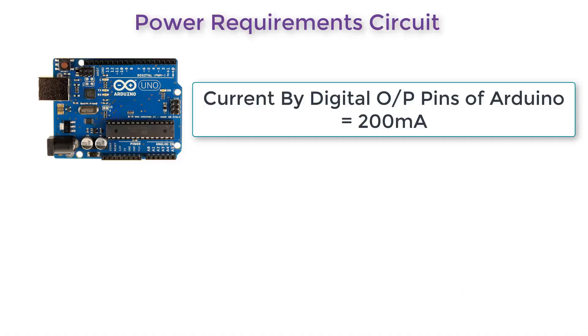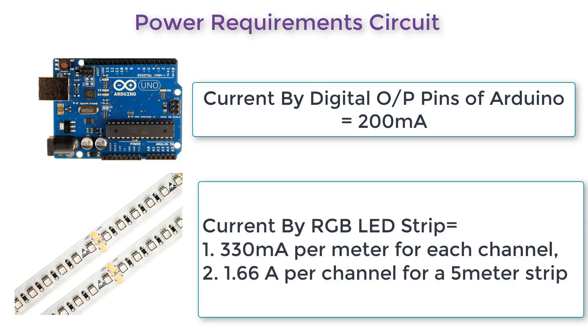Let's see the power requirement by the Arduino. The current by the digital output pin of Arduino is 200 milliampere, but the current by RGB LED strip is 330 milliampere for each channel and 1.66 ampere per channel for a 5-meter LED strip. So what to do in this case?